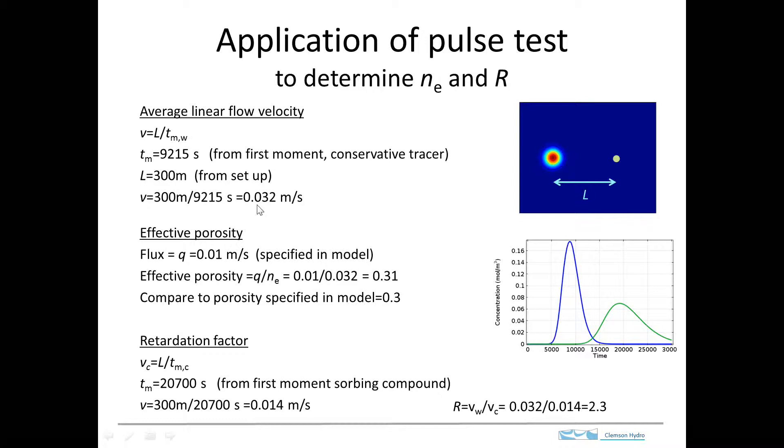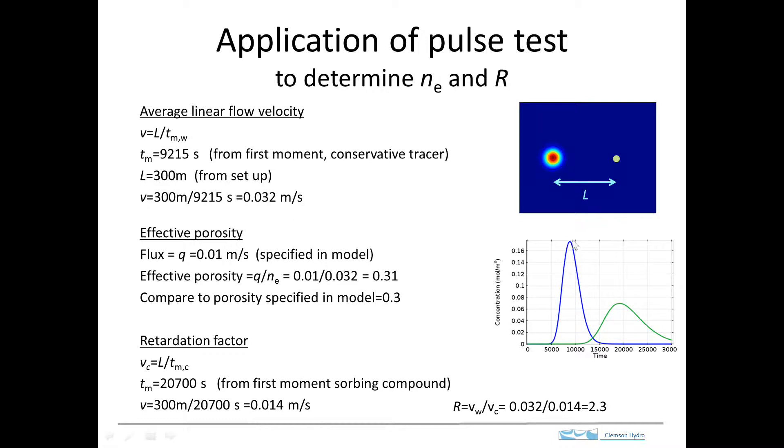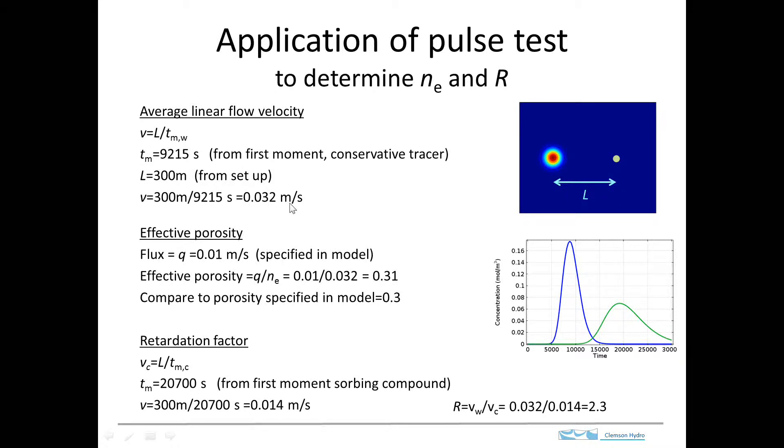And I did that in the analysis, and it's 9200 seconds. The distance in the analysis is 300 meters, so the average linear velocity is determined from this arrival time curve as 0.032 meters per second.